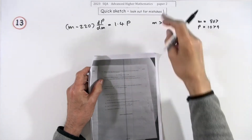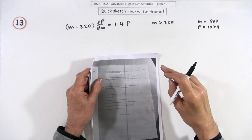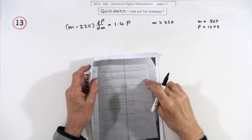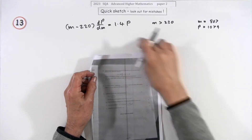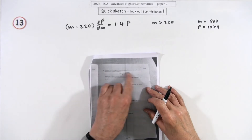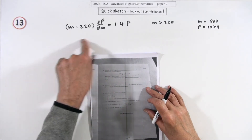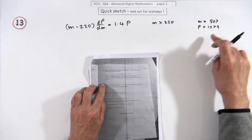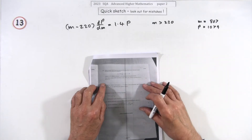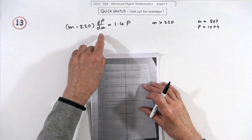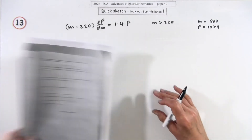Number 13 from paper 2 of the 2023 advanced tier — it's a six mark question for differential equation modeling. The points scored is given by a differential equation with a pair of values, and you have to find p in terms of m.